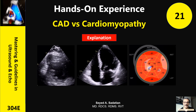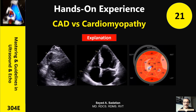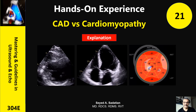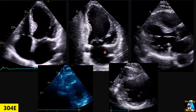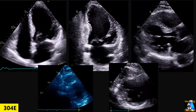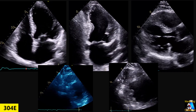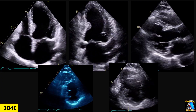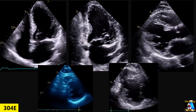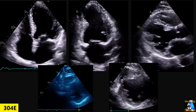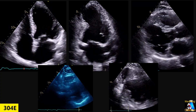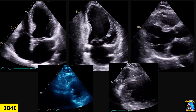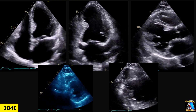Welcome to Mastering and Guideline in Ultrasound and ECHO. One of the criteria for diagnosis of cardiomyopathy is that all changes and findings are not due to coronary artery disease. So first of all, we have to rule out if the patient has an MI or not.